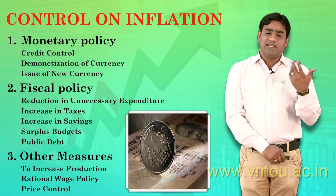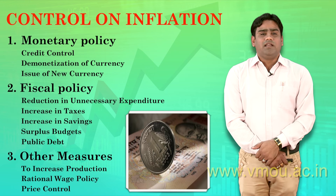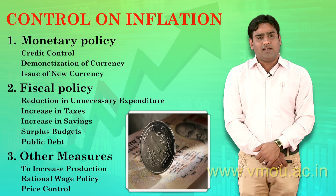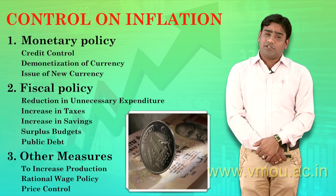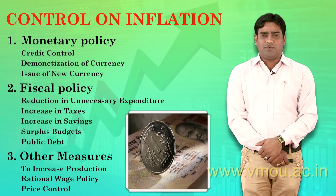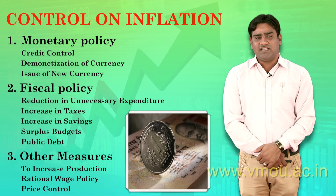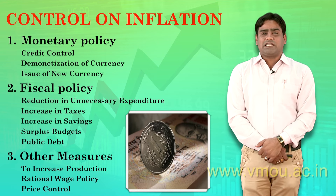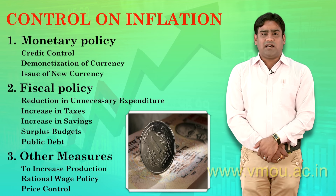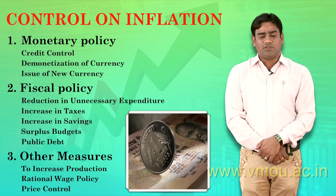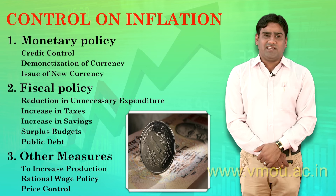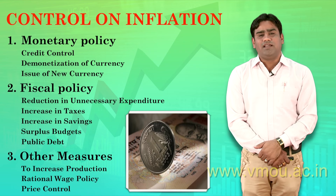The new money stock is reduced. Fiscal policy involves increasing taxes and managing expenditures. The surplus budget is maintained — revenue is increased and expenditure is reduced. Public debts are managed. Government borrowing is reduced. These are some of the ways we can try to control inflation.